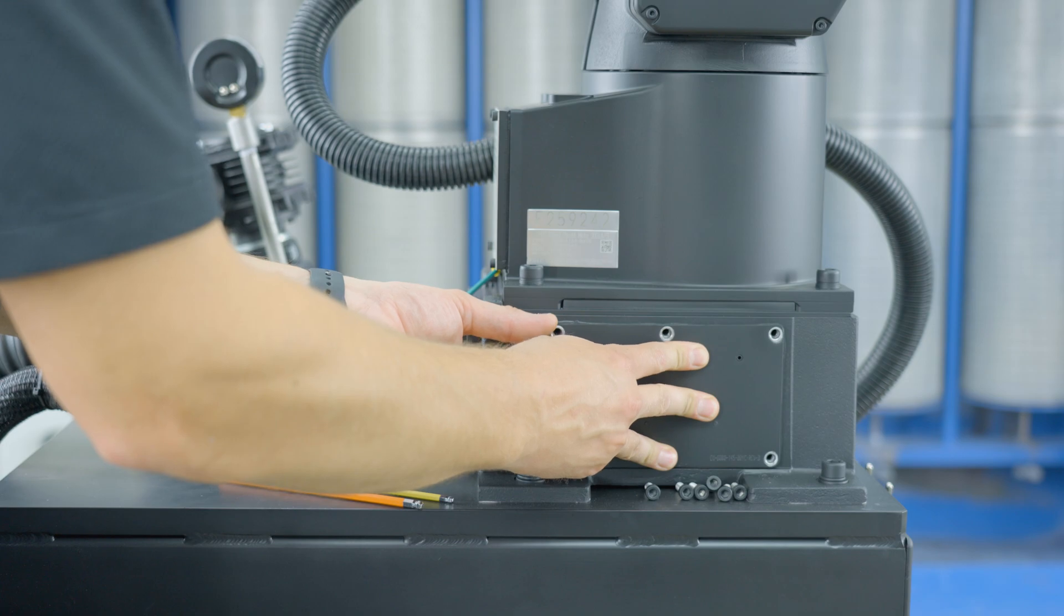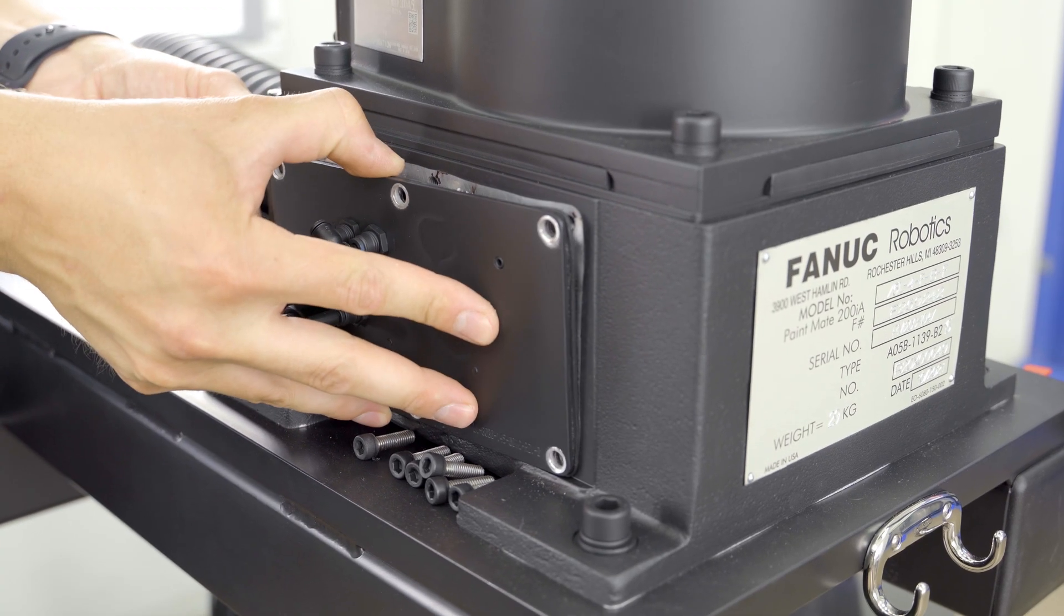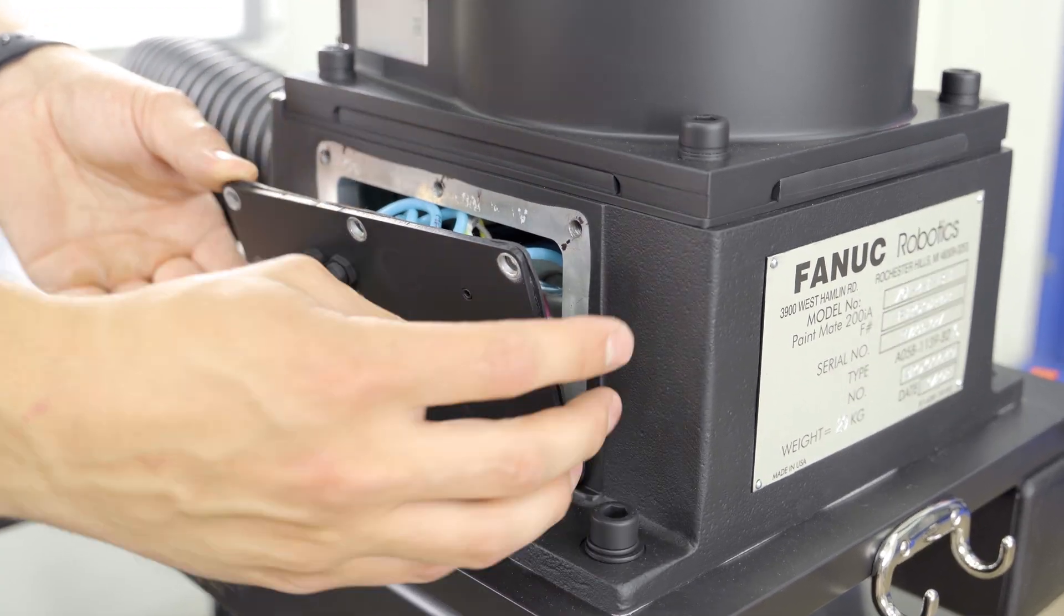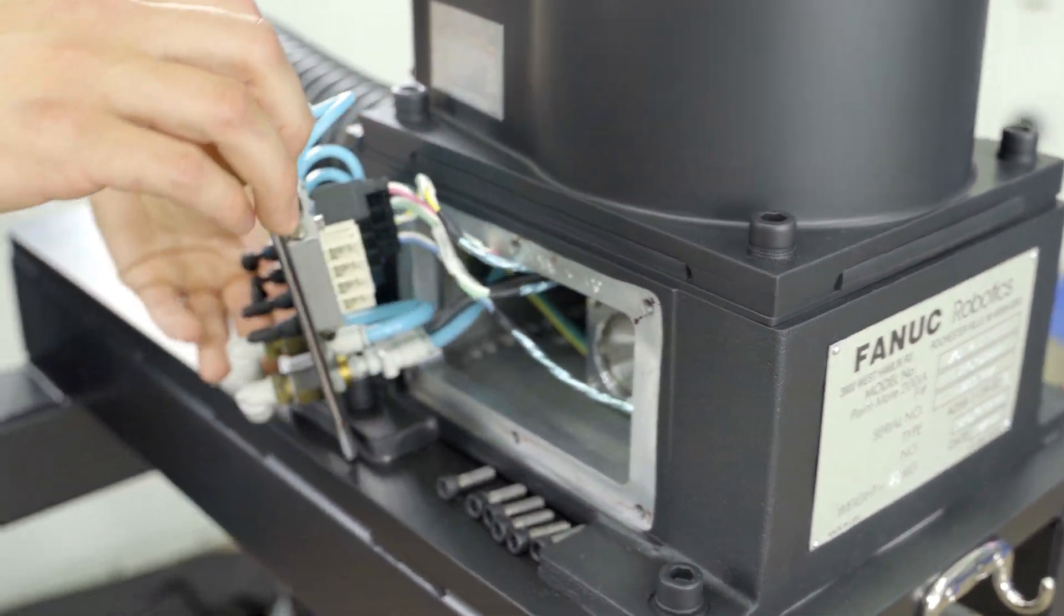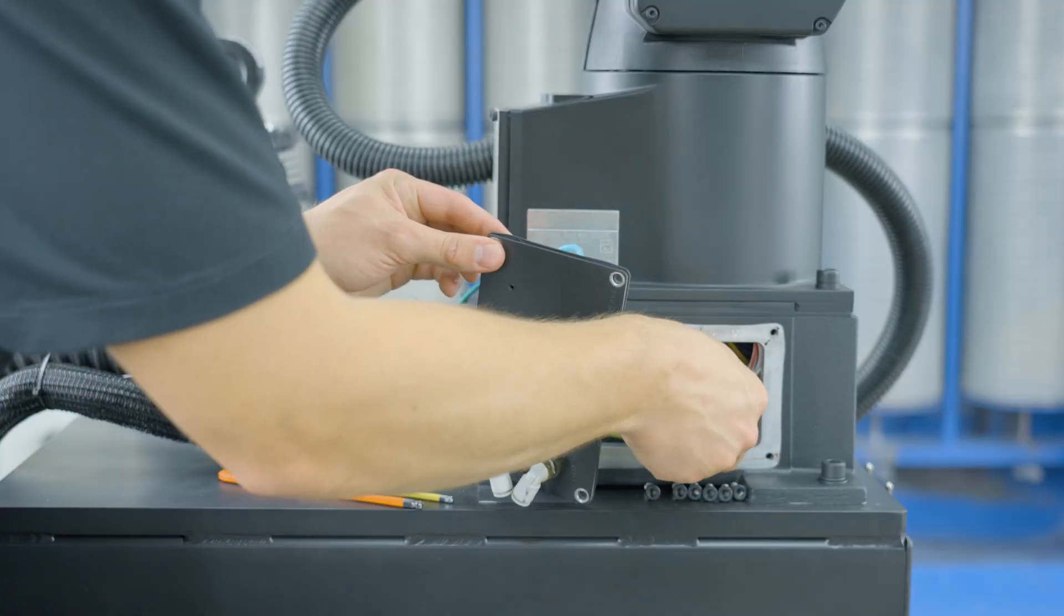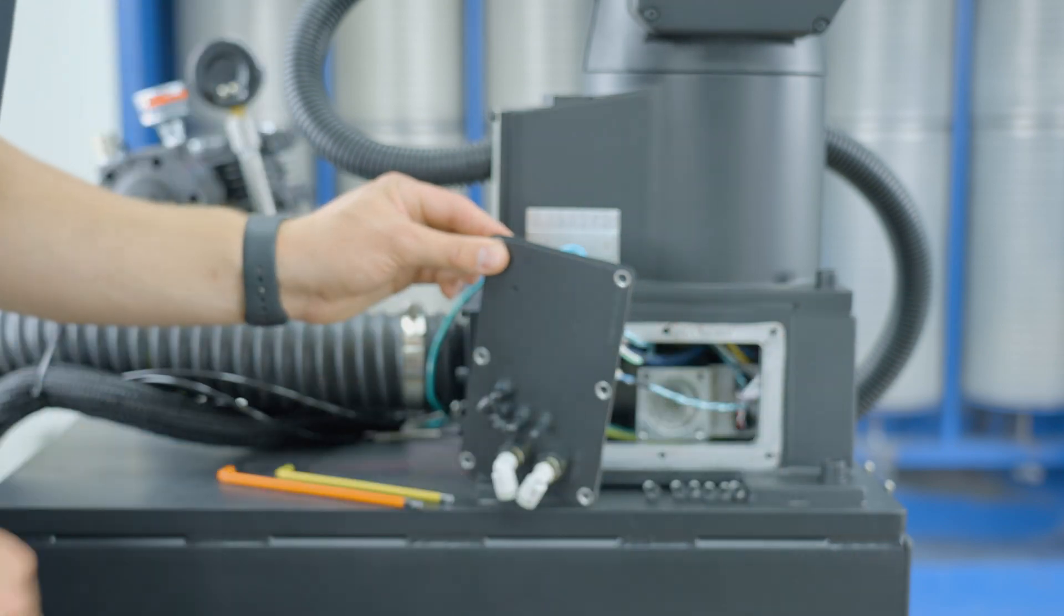Carefully remove the base plate from the base of the robot and pay careful attention not to tear the gasket. Swing the base plate out of the way. Do not tug on any of the electrical connections.